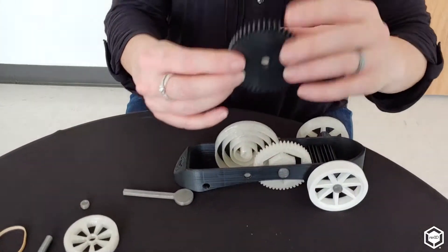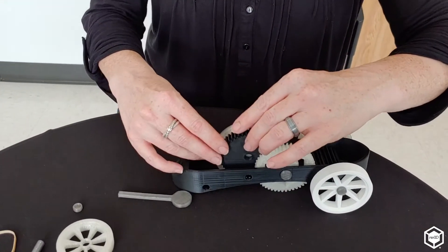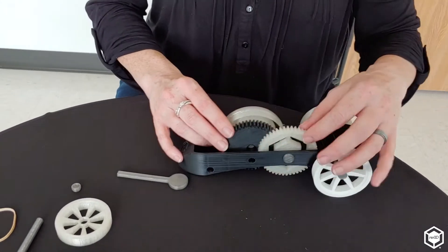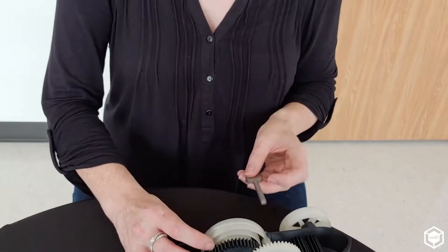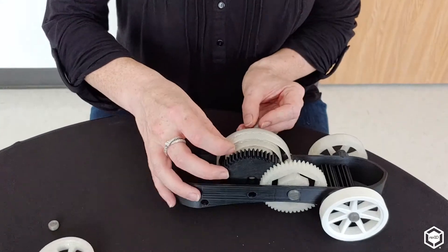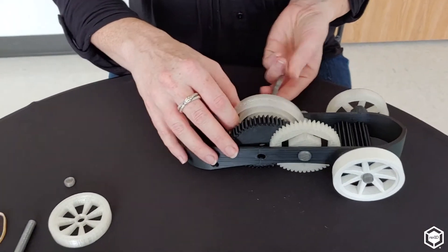Next gear is this one right here. Slides in between the gear and the spring. And then I'm going to put the crank through the spring.